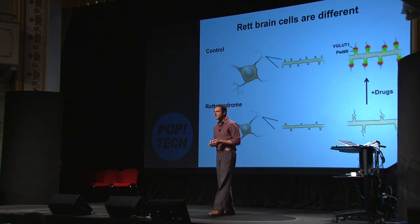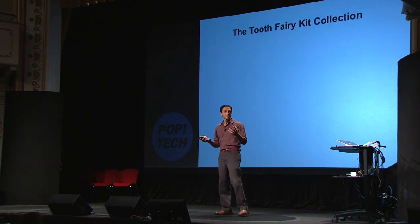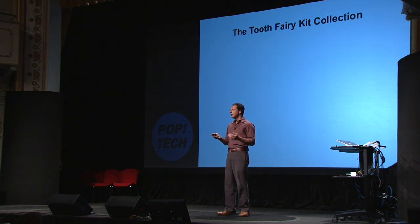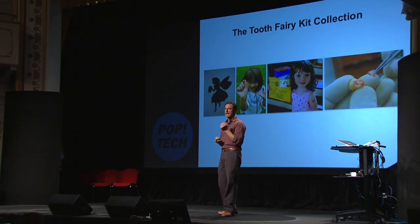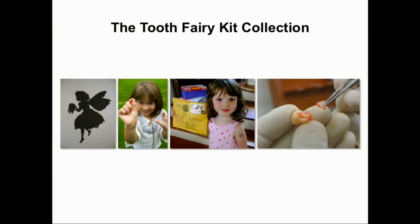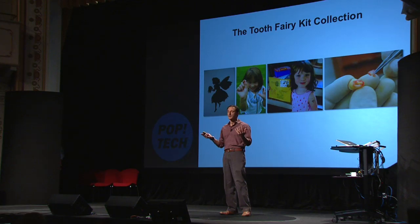We are expanding this idea to other types of autism. One way to do that is to take advantage of social networks: we interact with families and send them a tooth fairy kit collection, which is a small tube with some solution. We ask the kids to put their milk tooth in there and send it back to the lab, so we can extract dental pulp cells from those kids. We now have a library of several autistic types of brain cells in the lab, and we can start trying drugs in those cells before we move into patients.